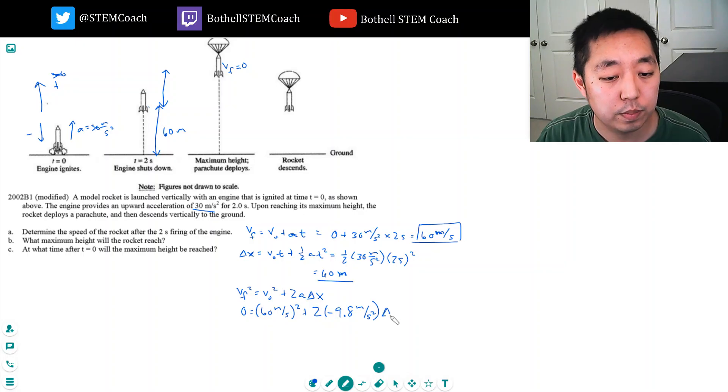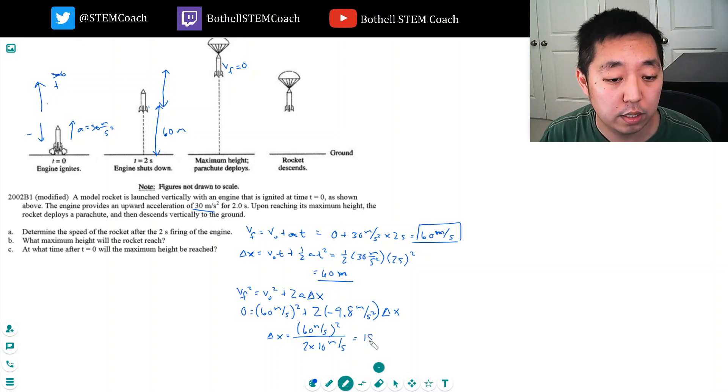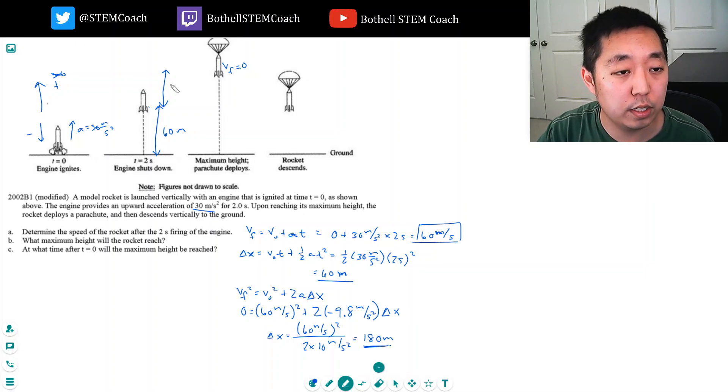So then I can rearrange this to say delta X is 60 meters per second squared, and instead of 9.8 I'm just gonna do 2 times 10, so I don't have to use my calculator. This is 3600, 1800, 180, 180 meters. If I use 9.8 meters per second squared it'll be a little more accurate, but 180 meters. So, 60 meters here, 180 meters here, so the total would be 240 meters.